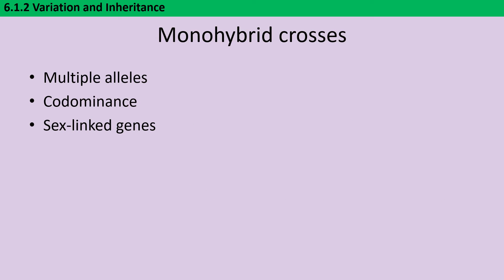Many examples of monohybrid crosses at A-level will have additional complications in the form of multiple alleles, codominant alleles, or sex-linked genes. But before we get onto those, let's recap how to construct Punnett squares as we did at GCSE, because you'll still need all of those skills for your A-level Punnett square crosses.